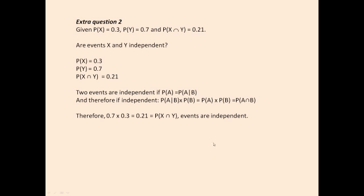Extra question 2. We're told that the probability of X is 0.3, the probability of Y is 0.7, and the probability of X and Y is 0.21. We're then asked whether X and Y are independent.